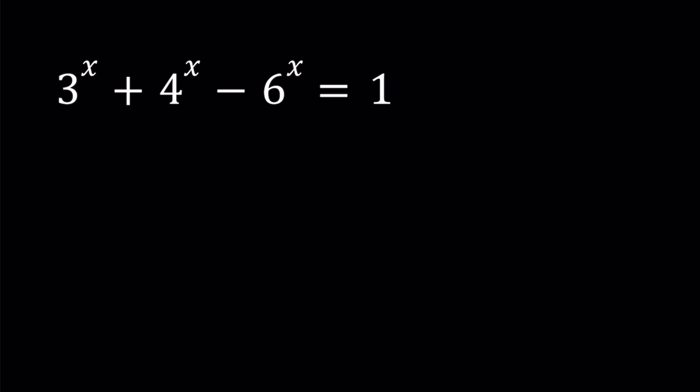I'll set a equal to 2 to the power x and b equal to 3 to the power x. And notice that 6 to the power x can be written as 2 to the power x times 3 to the power x because the bases are multiplied when the exponents are the same. So from here we can safely say that 6 to the power x can be written as ab. Great. So let's go ahead and substitute everything into our equation.